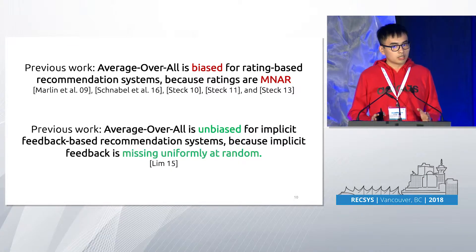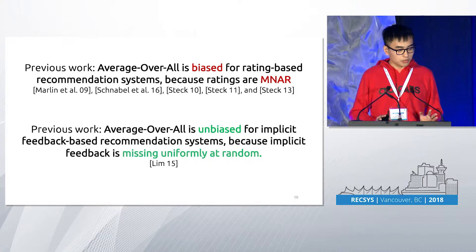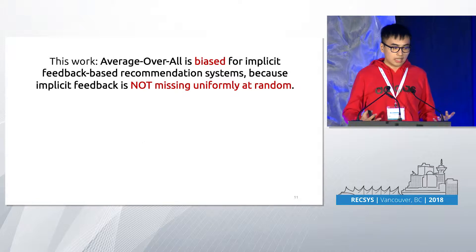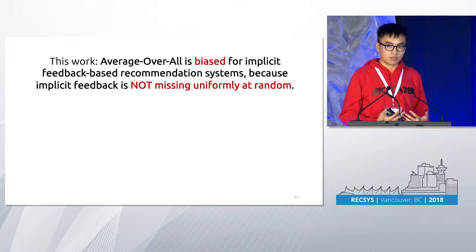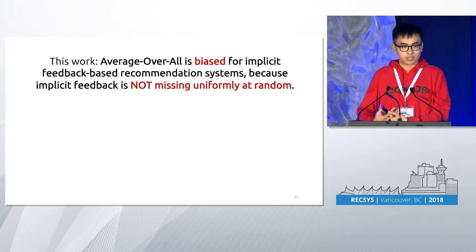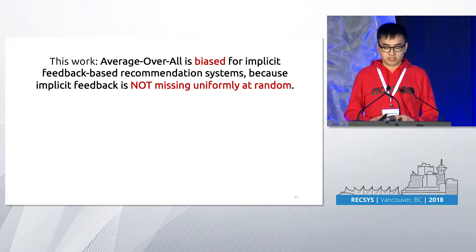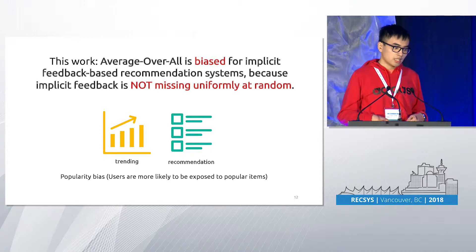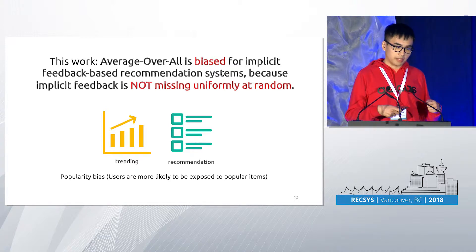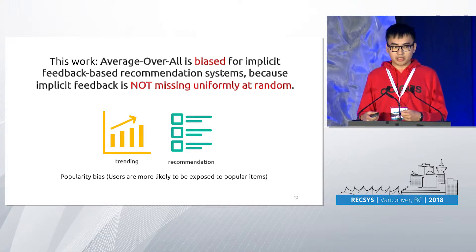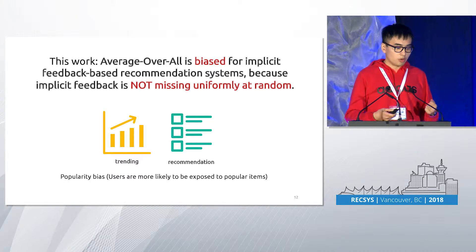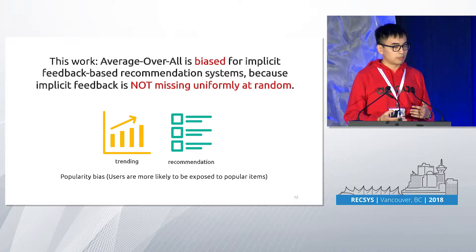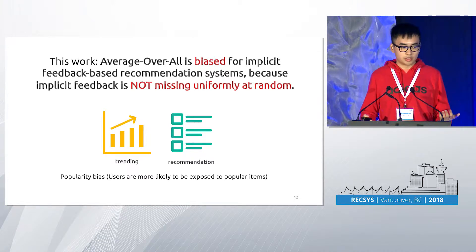In this work, we argue that implicit feedback is actually not missing uniformly at random. What this entails is that average overall is biased when used to evaluate implicit feedback-based recommendation algorithms. In particular, we investigate the evaluation bias introduced by popularity bias — that is, users are more likely to be exposed to popular items because item presentations are often ranked by popularity or some kind of recommendation algorithm.